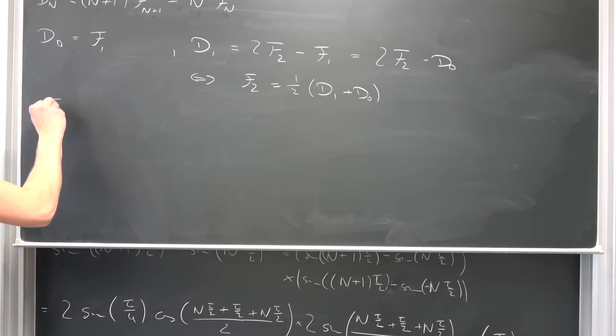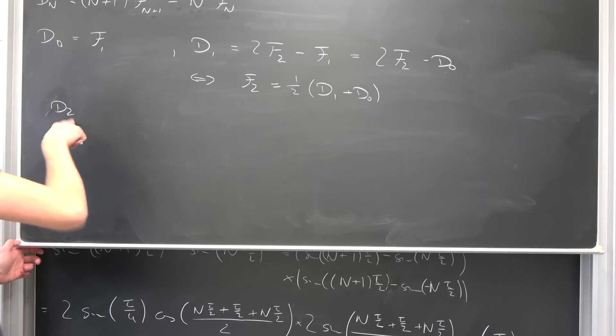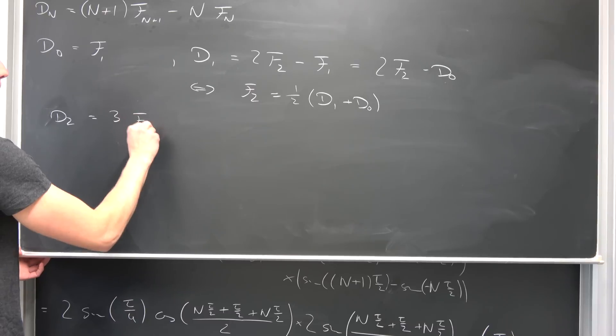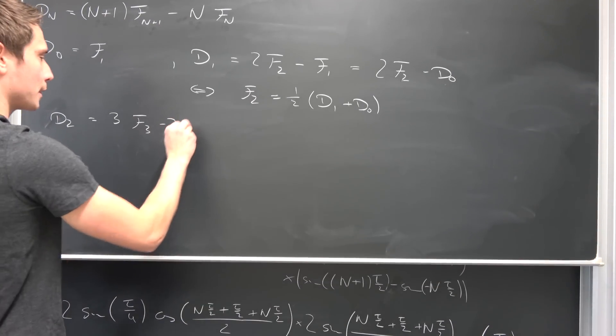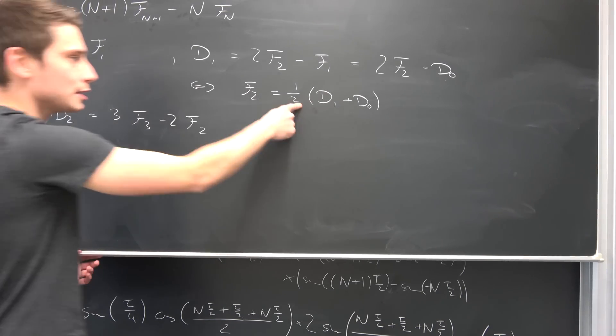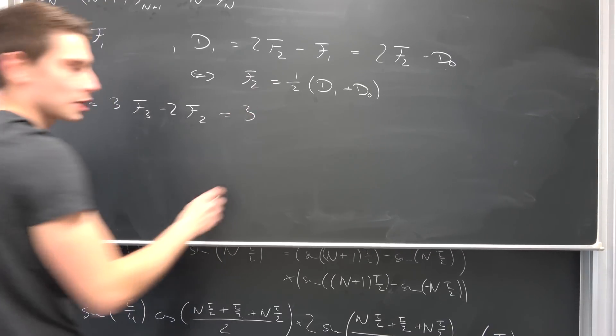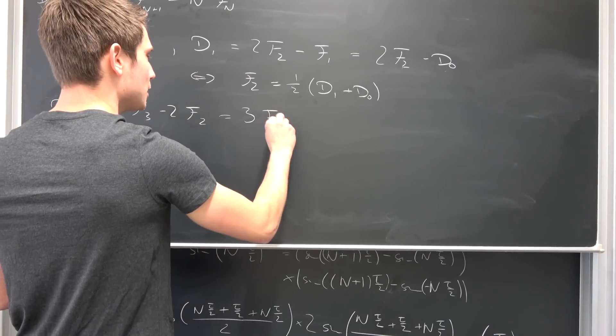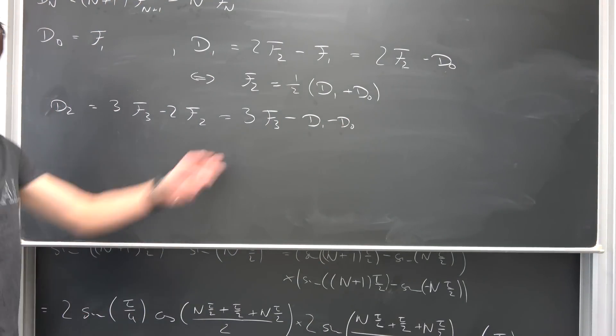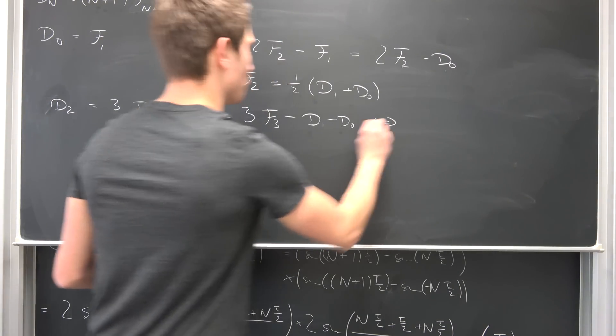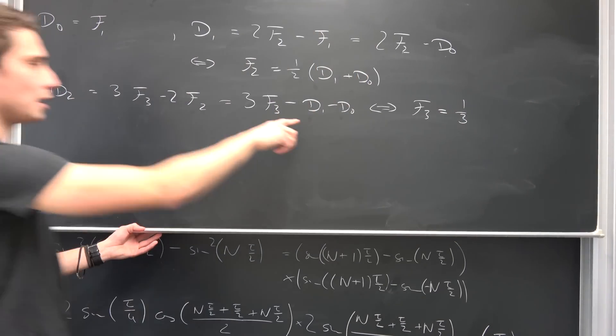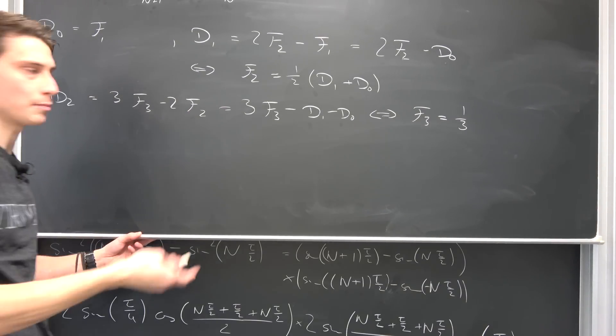Let us move on one more iteration and maybe you can already see a pattern right here. So we are going to get D_2. Dirichlet of degree 2, it's nothing but 3 times Fejer of degree 3 minus 2 times Fejer of 2. But we know what Fejer of 2 is, it's nothing but this right here. 2 and 1/2 is going to cancel out to just 1. So this is 3 times Fejer of degree 3 minus D_1 minus D_0. Why not add those on both sides and divide both sides by 3. It's not equal to 0. We are going to end up with Fejer of 3 being equal to 1/3 times (D_0 + D_1 + D_2).